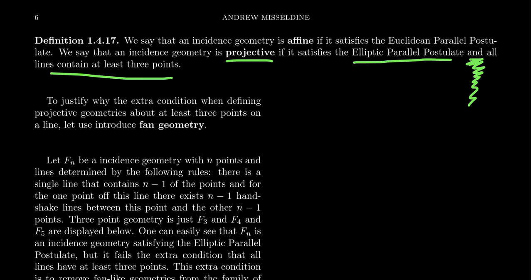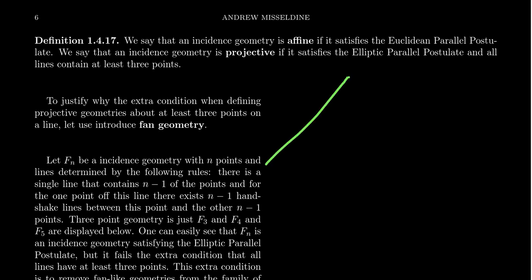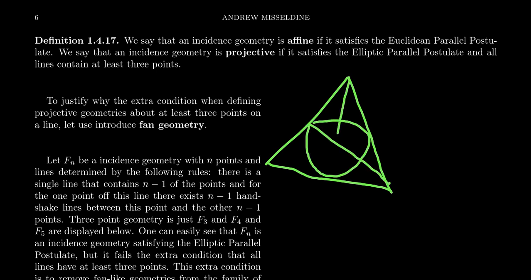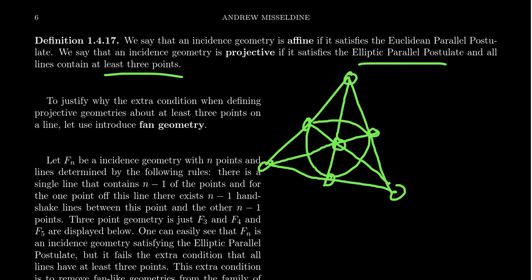Fano geometry is a projective geometry. If we draw our 'Deathly Hallows' diagram — seven points, seven lines, with the resurrection stone, cloak of invisibility, and three elder wands — Fano geometry is an example of a projective geometry. It satisfies the elliptic parallel postulate, which was axiom five of Fano geometry, it's an incidence geometry, and all lines contain at least three points — in Fano geometry, all lines have exactly three points.